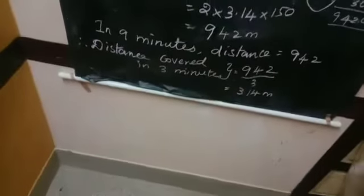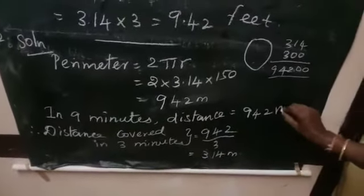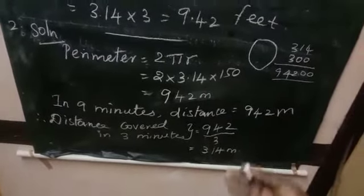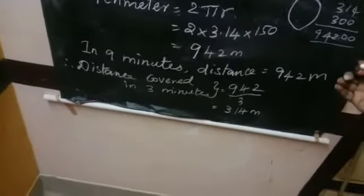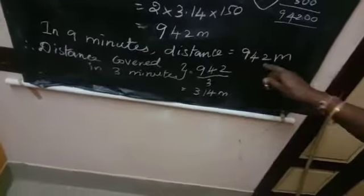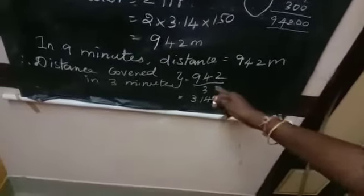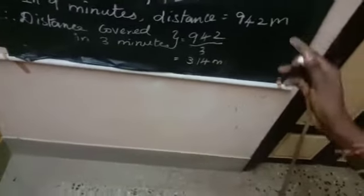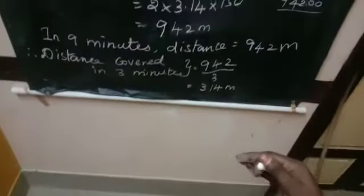In 9 minutes the distance is 942 meters. Therefore, distance covered in 3 minutes: We want to divide 942 divided by 3. So in 9 minutes the distance is 942. We want to find out the 3 minutes distance.